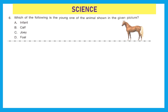Let's move to the next section: science. Question 6: which of the following is the young one of the animal shown in the given picture? The picture shows a horse. Option A is infant — young one of a monkey. B is calf — young one of a cow. C is joy — young one of a kangaroo. D is foal, and this is the right answer because foal is the young one of a horse.